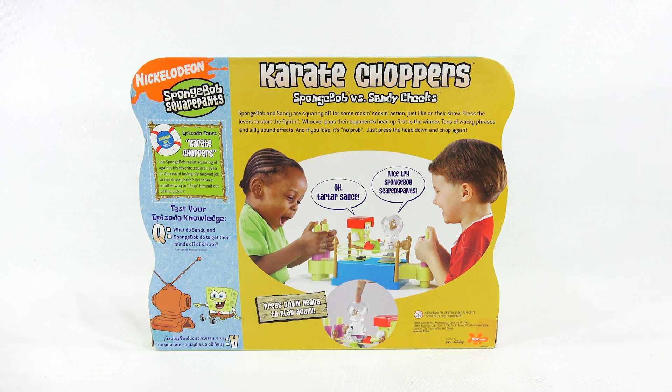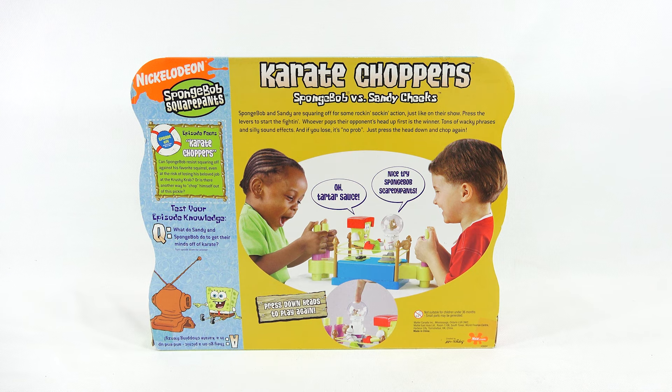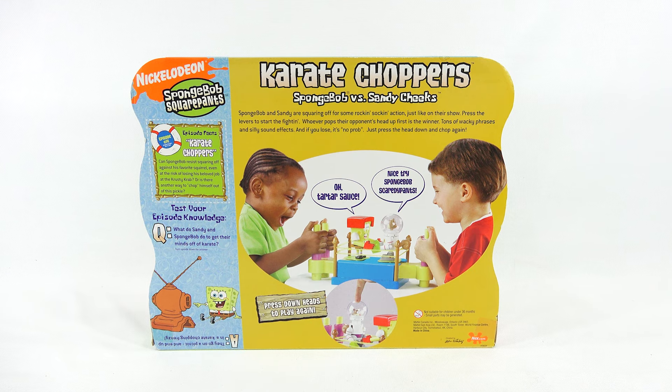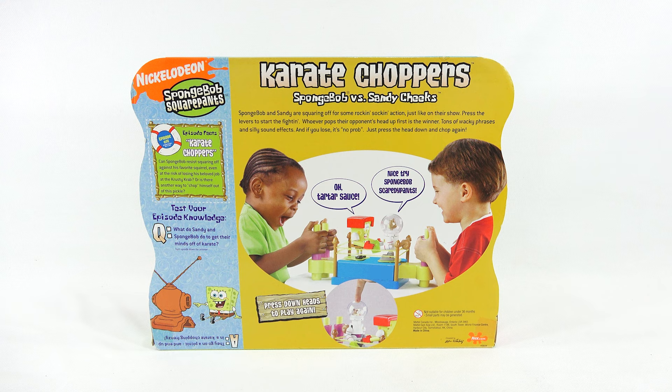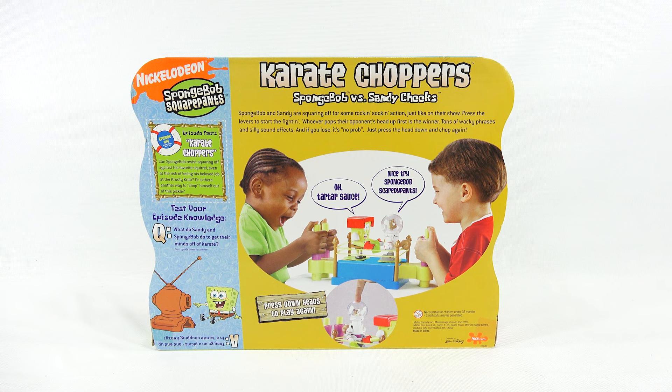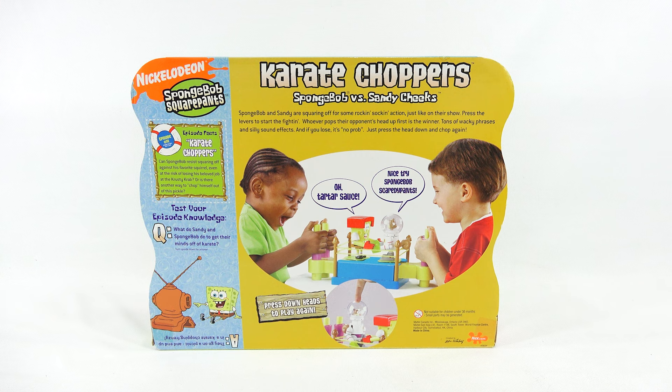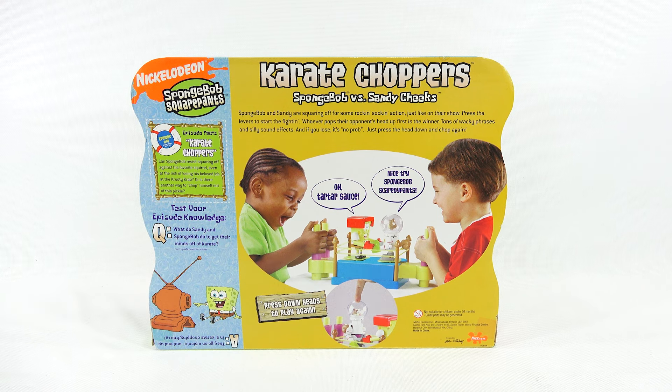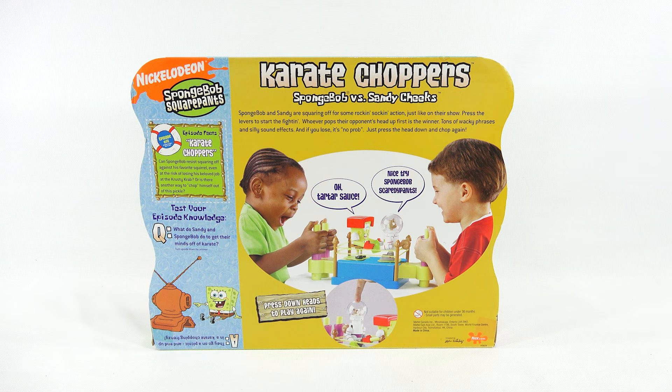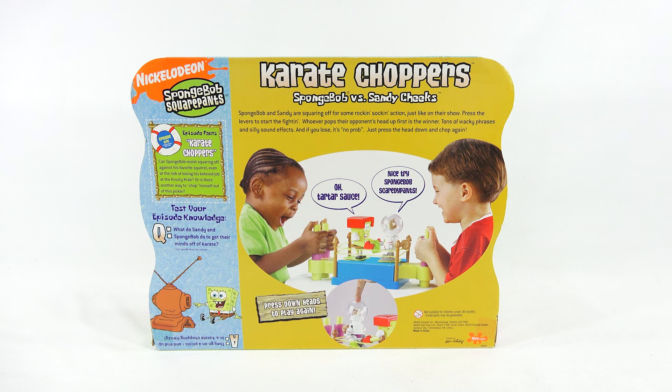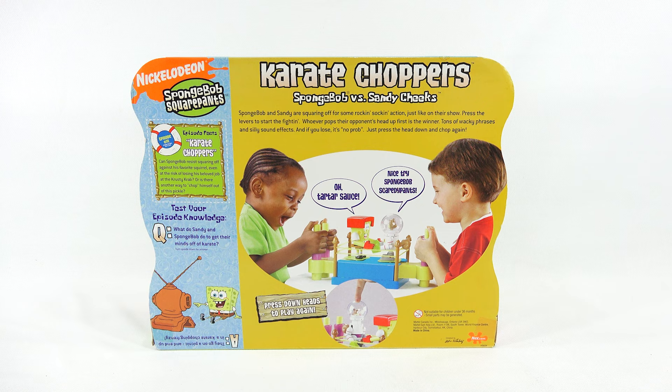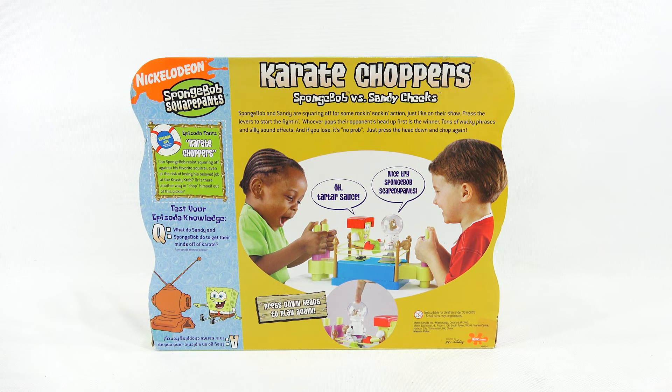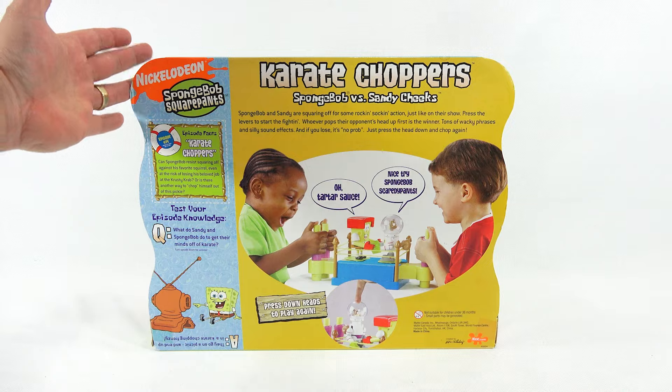At the top now, it says, SpongeBob and Sandy are squaring off for some rockin' sockin' action. Just like on their show. Press the levers to start the fightin'. Whoever pops their opponent's head up first is the winner. Tons of wacky phrases and silly sound effects. And if you lose, it's no prob. Just press the head down and chop again. And then we see there's two kids fighting in the middle. It says, oh tartar sauce, and nice try SpongeBob scaredy pants. Press heads to... Press down heads to play again. It's pretty cool. I mean, it's definitely a nice box the way it's cut around the edges.